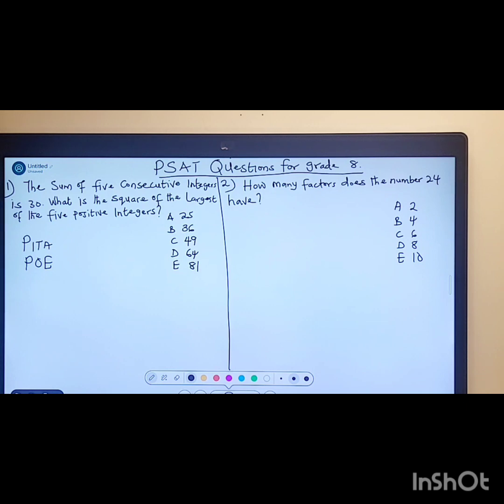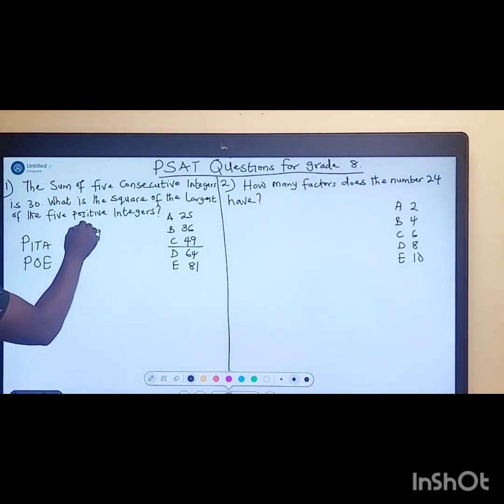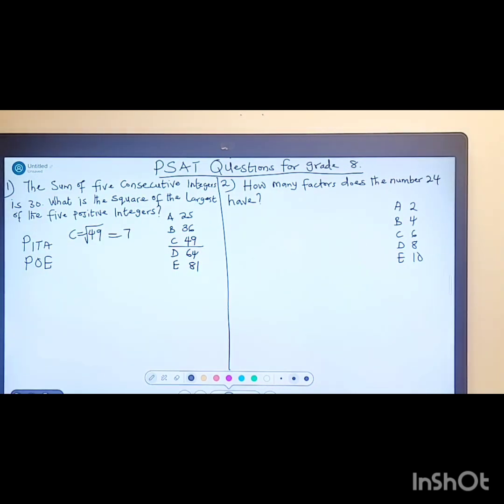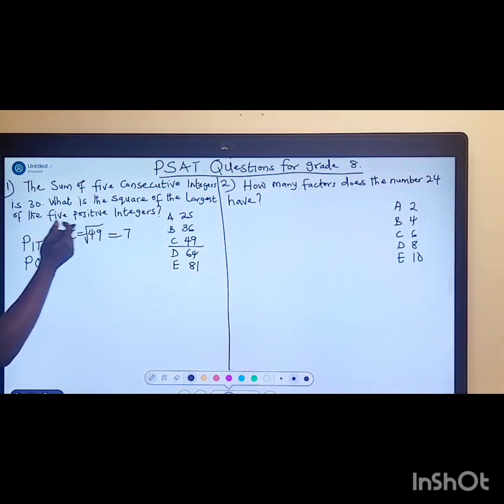They've given us the square of the largest of the five positive integers. If you look at this, you don't need to check A or B, go straight to C which is 49. The square root of this is 7, so the consecutive integers will be 3 + 4 + 5 + 6 + 7.